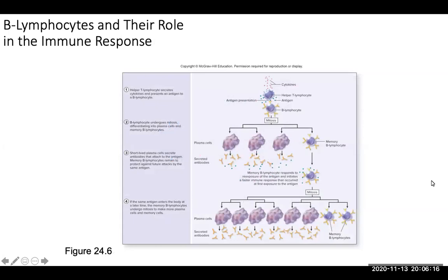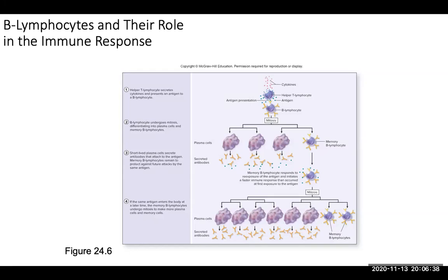B lymphocytes and their role in the immune response: helper T lymphocytes will secrete cytokines and present an antigen to the B lymphocyte. The B lymphocyte will then undergo mitosis and differentiate into plasma cells and memory B cells. Short-lived plasma cells will secrete antibodies, and memory B cells will remain to protect against future attacks. If the same antigen enters the body at a later time, your memory B cells will undergo mitosis to make more plasma cells and memory cells.